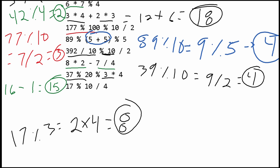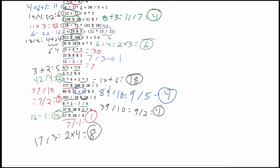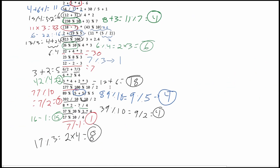Last one: we have 17 modulus 10, which is 7. We divide this by 4, and this gives us the value 1. Those are all of our answers.